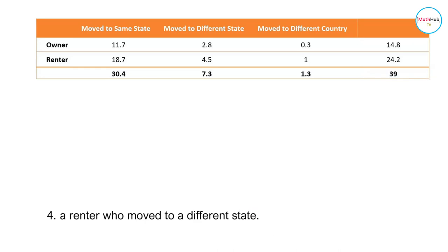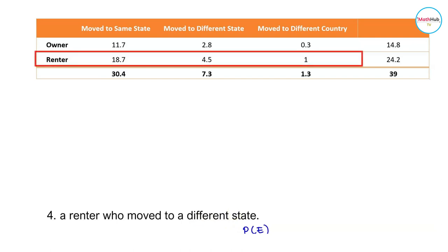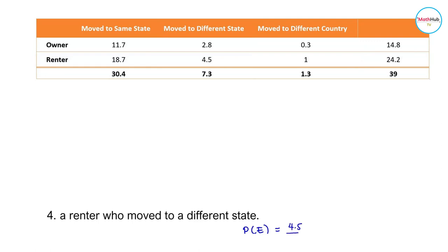Next, we want to find the probability that a randomly selected American who moved was a renter who moved to a different state. We look at the renters who moved to a different state, which gives us the value 4.5. It is 4.5 divided by the total number of possible outcomes, which is 39. 4.5 divided by 39 is approximately equal to 0.12.